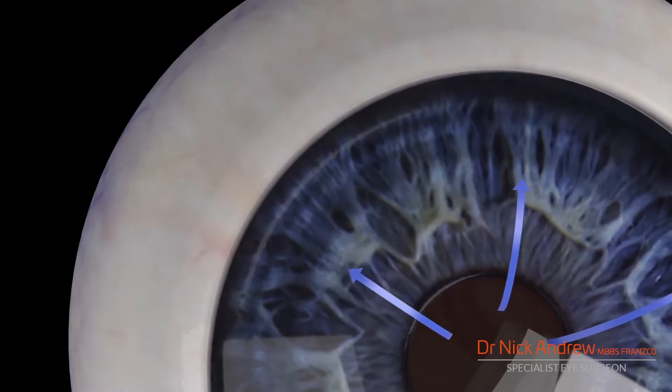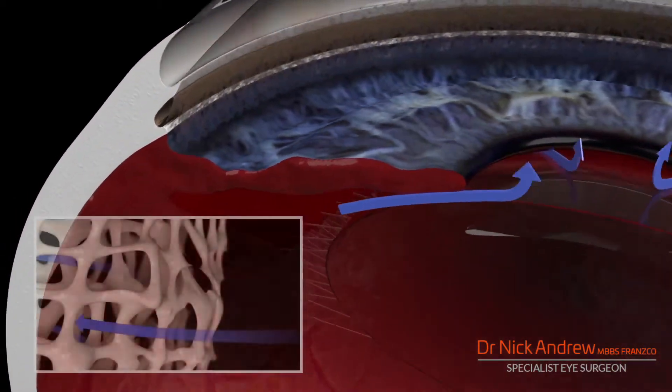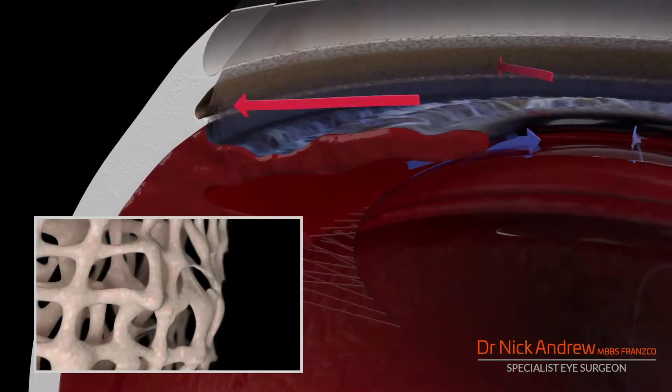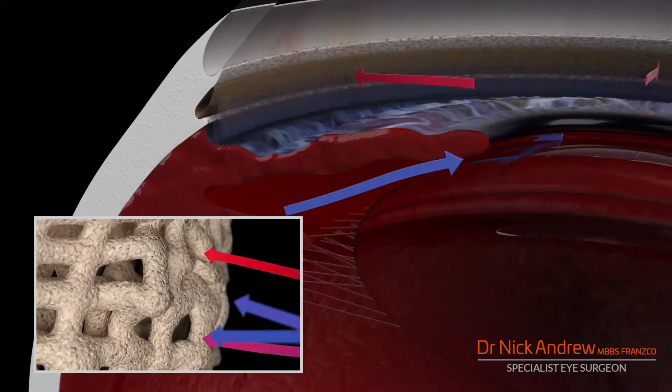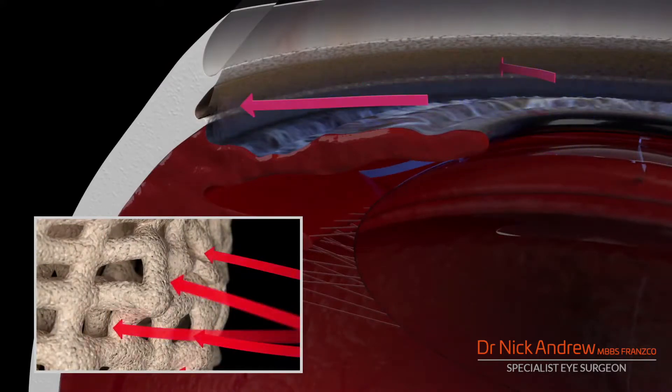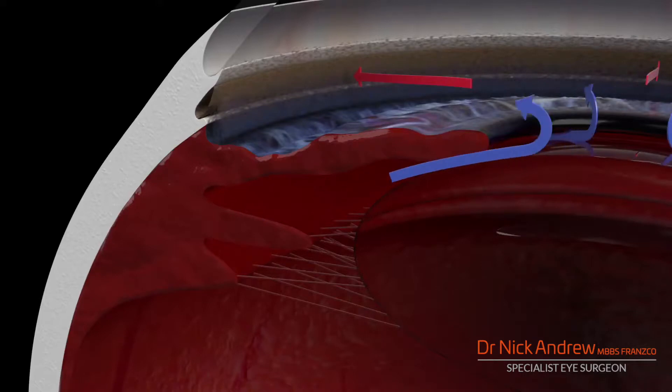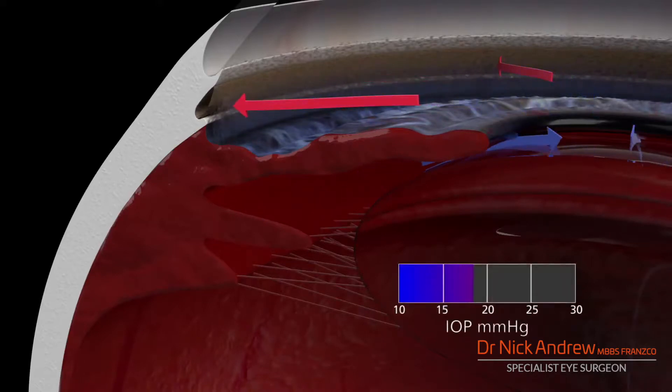In glaucoma, the trabecular meshwork becomes thickened and less permeable. In addition, Schlem's canal may also collapse. Fluid can no longer flow through these structures easily, resulting in increased resistance to fluid drainage.